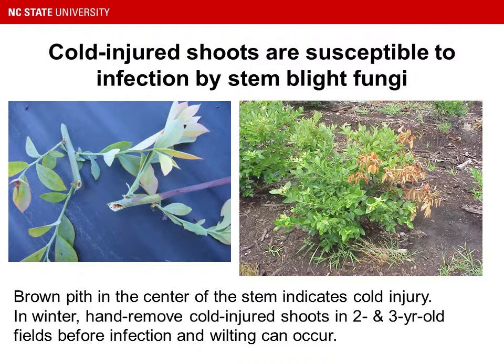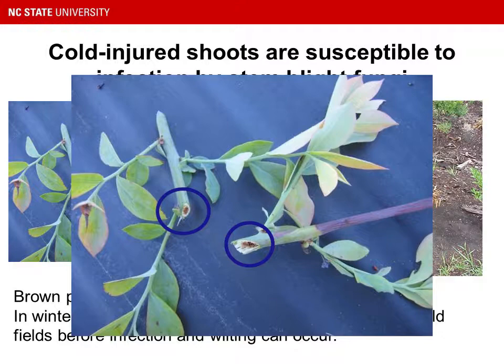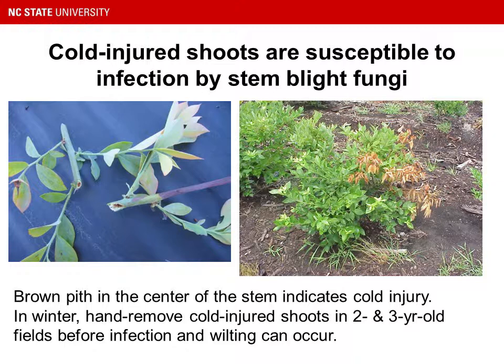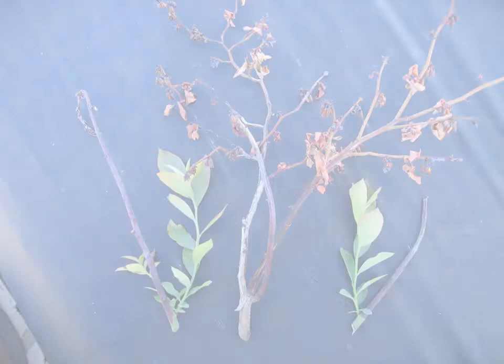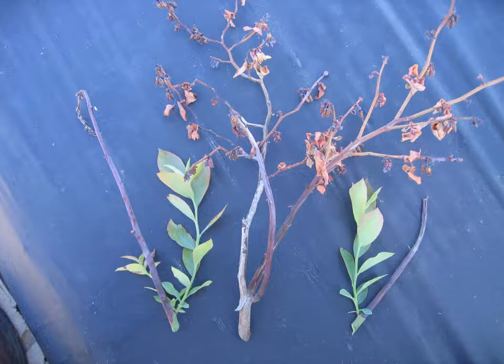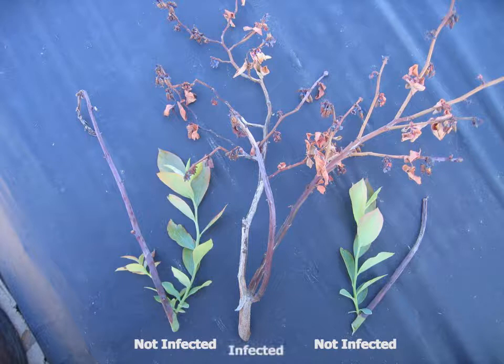These cold-injured shoots are susceptible to infection because they're damaged. Botryosphaeria stem blight is a wound pathogen, and you can see the image on the left — the brown pith in the center of the stem that indicates it's cold injured. If you can hand-remove and prune out those cold-injured shoots in two- and three-year-old fields in the wintertime, you'll get rid of them before they can get infected. If cold-injured shoots are not removed, you'll see something like the shoot in the center of this image. Two of the shoots are not infected — they're just showing the old cold injury with new shoots emerging next to them. The one in the center also has a cold-injured shoot, but it became infected by the Botryosphaeria stem blight fungus and killed the entire plant. This is what we're trying to avoid by pruning out that cold-damaged wood as soon as possible.